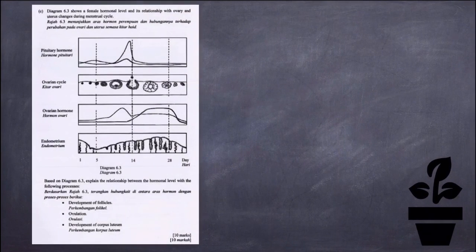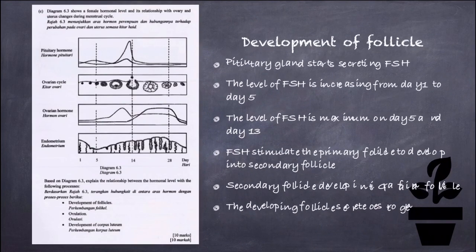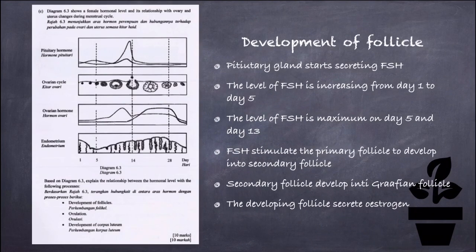For the first process, which is the development of the follicle: it starts when the pituitary gland begins to secrete follicle-stimulating hormone, FSH. The level of FSH increases from day 1 to day 5, reaching maximum levels on day 5 and day 13. FSH stimulates the primary follicle to develop into a secondary follicle, which then develops into a Graafian follicle. The developing follicle secretes estrogen.